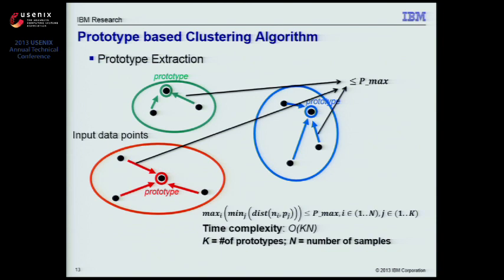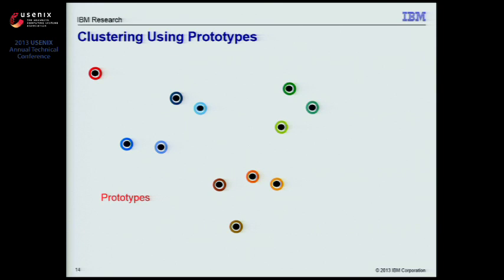In other words, all data points are within a certain radius or neighborhood of some prototype. We can view the prototype as a representative data sample of a group of similar data points. The time complexity for selecting these prototypes is O(N × K), where K is the number of prototypes and N is the number of samples. The second step of the clustering algorithm is to cluster the prototypes.